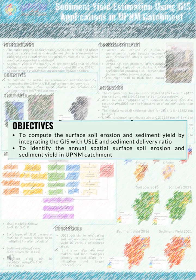The main objective of this study is to compute the surface soil erosion and sediment yield by integrating GIS with RUSLE and the sediment delivery ratio, and also to identify the annual spatial distribution of surface soil erosion and sediment yield in the UPNM catchment.